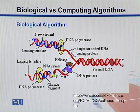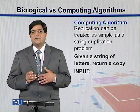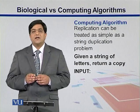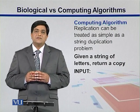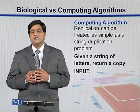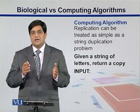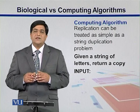Whereas this biological sequence problem, in the case of a computing algorithm, is really simple. This complicated process involving many molecules and proteins can be treated in computers as simply a string duplication problem. DNA is a long string made up of four variables — A, T, G, and C — and replication is simply the duplication of that string.